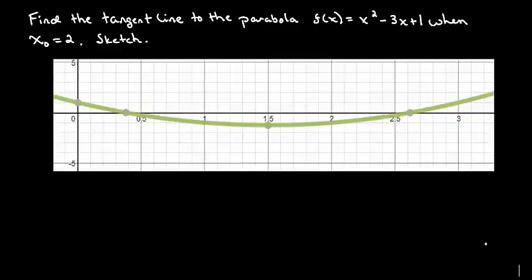Here I've grabbed a picture of the graph. That way it looks a little bit better than my sketch. And so what we're asked to do is find the tangent line to this particular parabola here at an x value of 2. So I need to go ahead and find the equation of the line that looks something like this. That's the guy I've got to find.